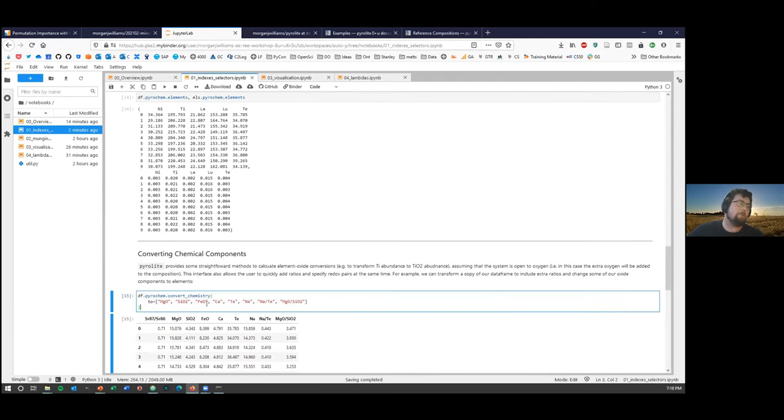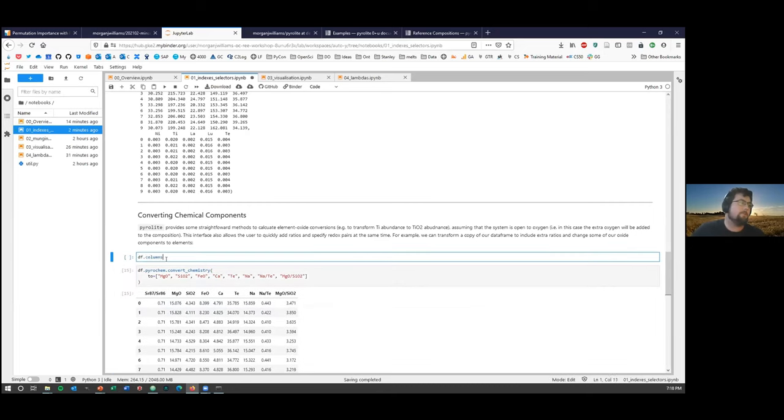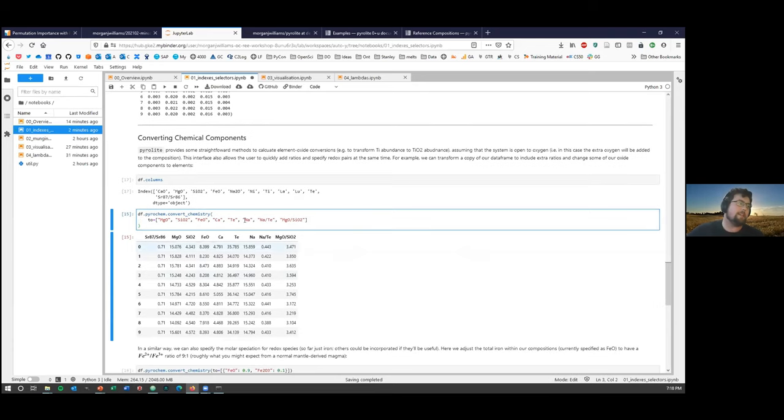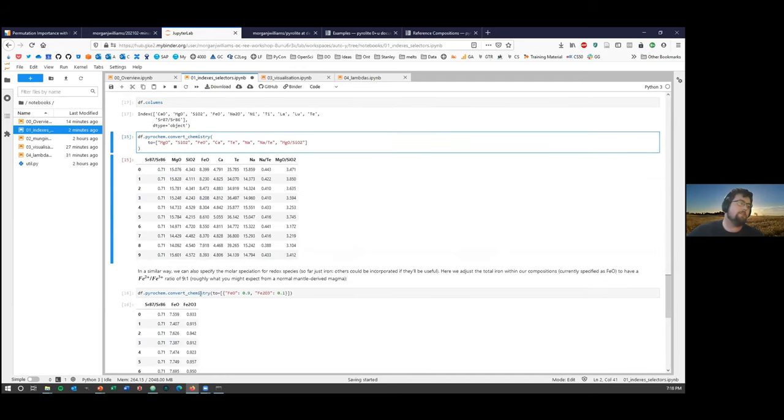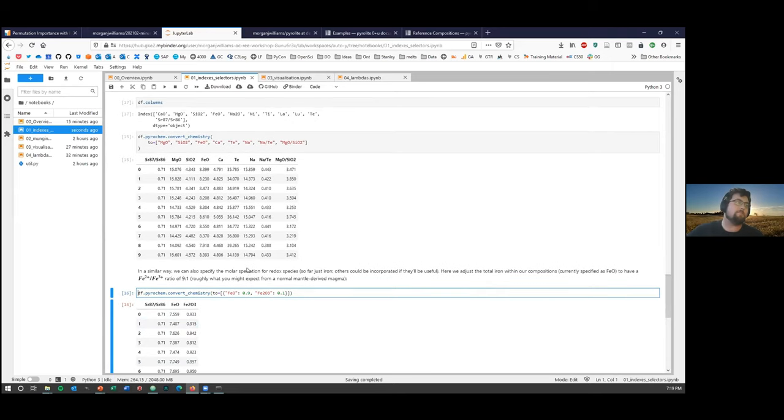Pyrolite also enables you to convert chemical components. So say if you wanted to go from a current data frame which has these columns, and then we want to convert, say calcium oxide or sodium oxide to elemental values and add some ratios on the end, you can do that as well. That'll just do the conversion for you. And then also specifically for iron, if you have iron as total iron and you want to split it based on a molecular ratio into say 90 percent ferrous iron and 10 percent ferric iron, it can do that for you as well. Anything it doesn't really know what's going on with, it'll just append on the left.